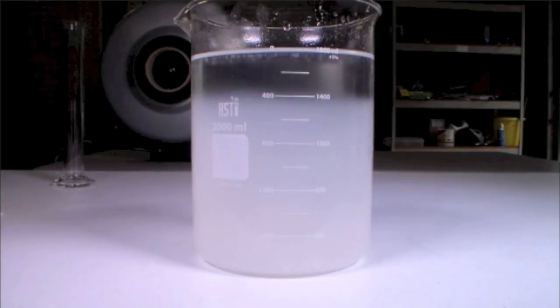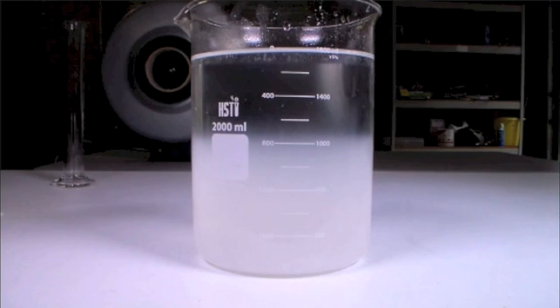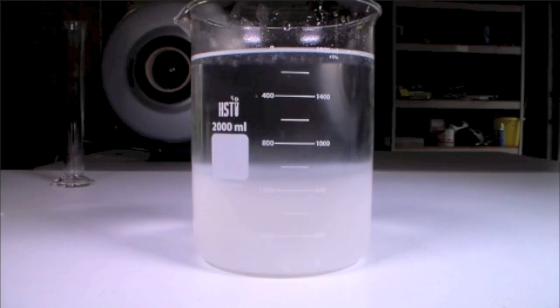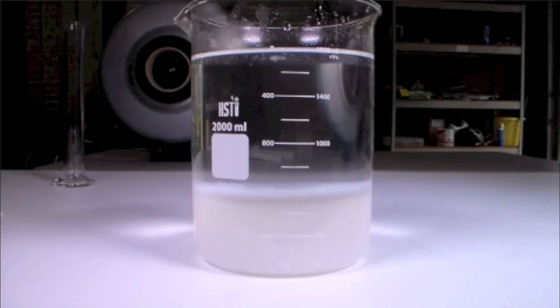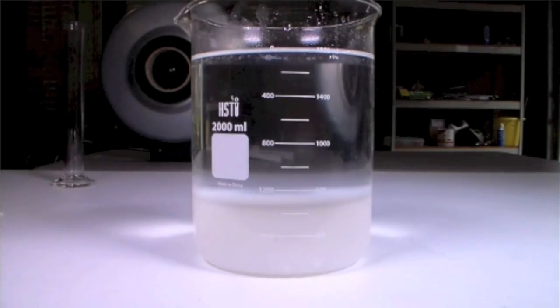This step serves to remove sodium chloride, the side product of this reaction, from the Aluminum Oxide. Sodium chloride is soluble in water, so it can be easily removed by washing the mixture with a lot of water. Aluminum Oxide, on the other hand, will not dissolve in the water.